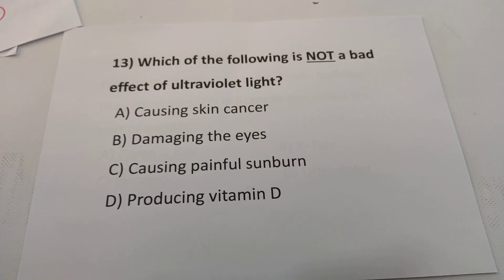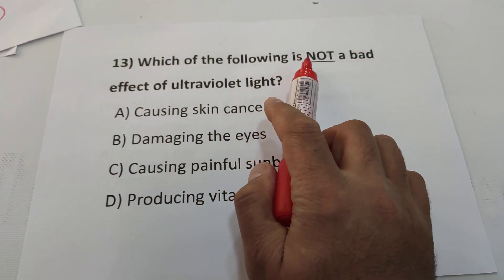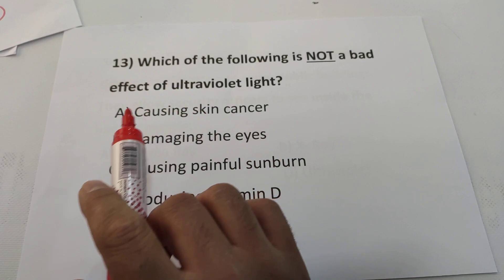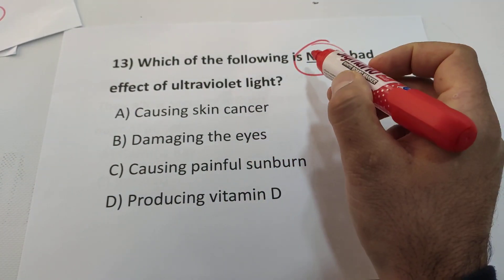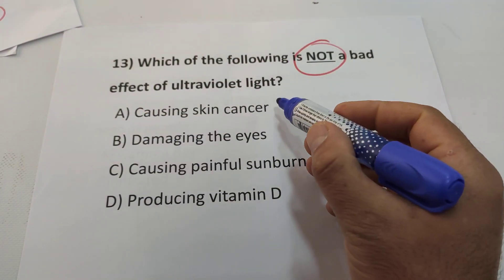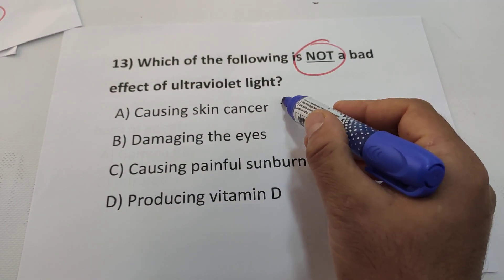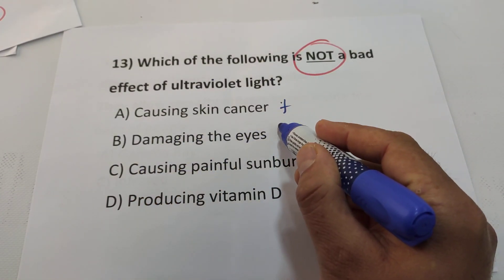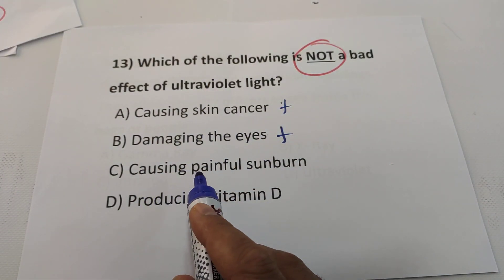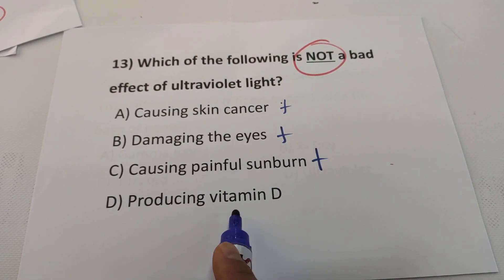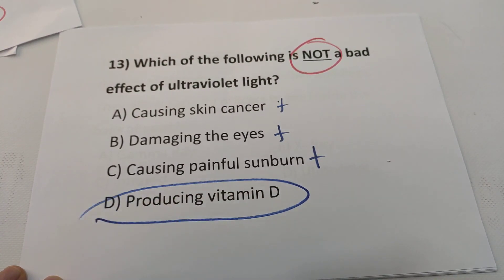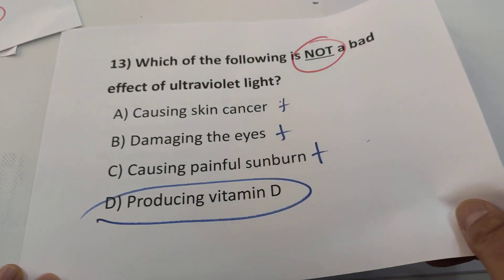Question 13: Which of the following is NOT a bad effect of ultraviolet light? Read carefully — causing skin cancer is a bad effect, damaging the eyes is a bad effect, causing painful sunburn is a bad effect. But vitamin D production is a good effect — it is very important for our body. The answer is D.